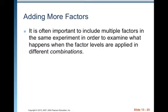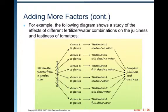Adding more factors: it is often important to include multiple factors in the same experiment to examine what happens when factor levels are applied in different combinations — that goes back to the idea of looking at diet and exercise together. For example, the following diagram shows a study of the effects of different fertilizer-water combinations on the juiciness and tastiness of tomatoes. There are 12 tomato plants from a garden store and six different treatment groups: control/no water, half dose/no water, full dose/no water, then control/water, half dose/water, and full dose/water. Each group has two plants, and then you compare juiciness and tastiness.